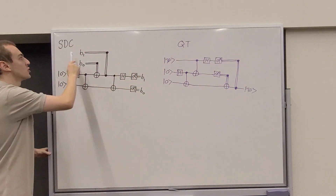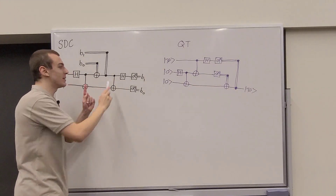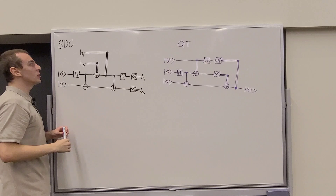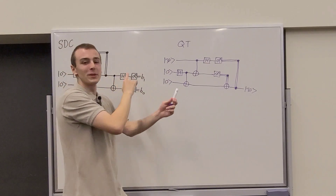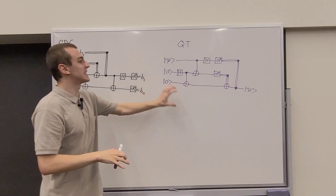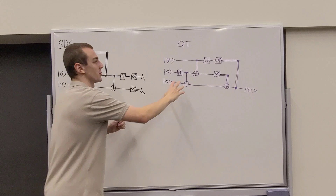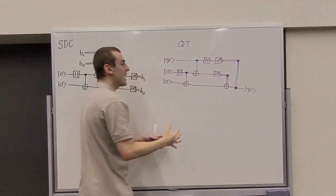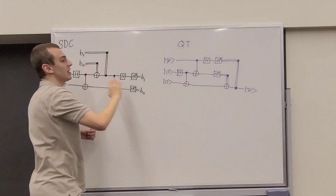This is the opposite of super-dense coding: in SDC, a single qubit is sent between Alice and Bob and the net effect is to communicate two classical bits. The quantum circuit diagrams are composed of similar components — an entanglement part, an un-entanglement part, measurements, and classically controlled bit flips and phase flips.